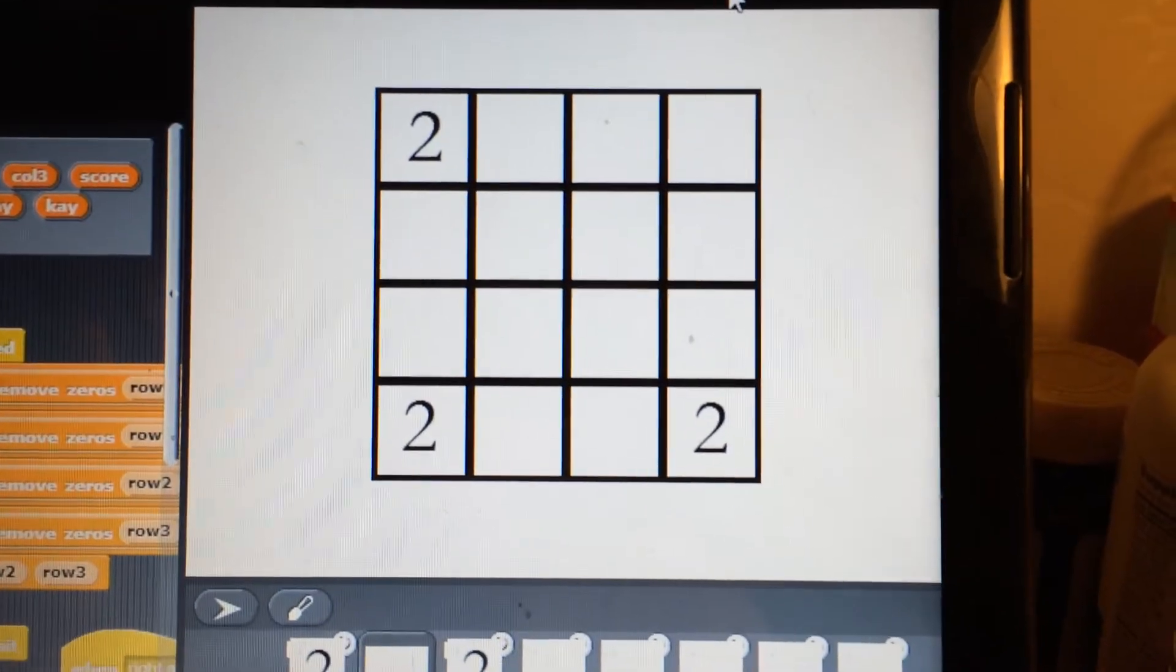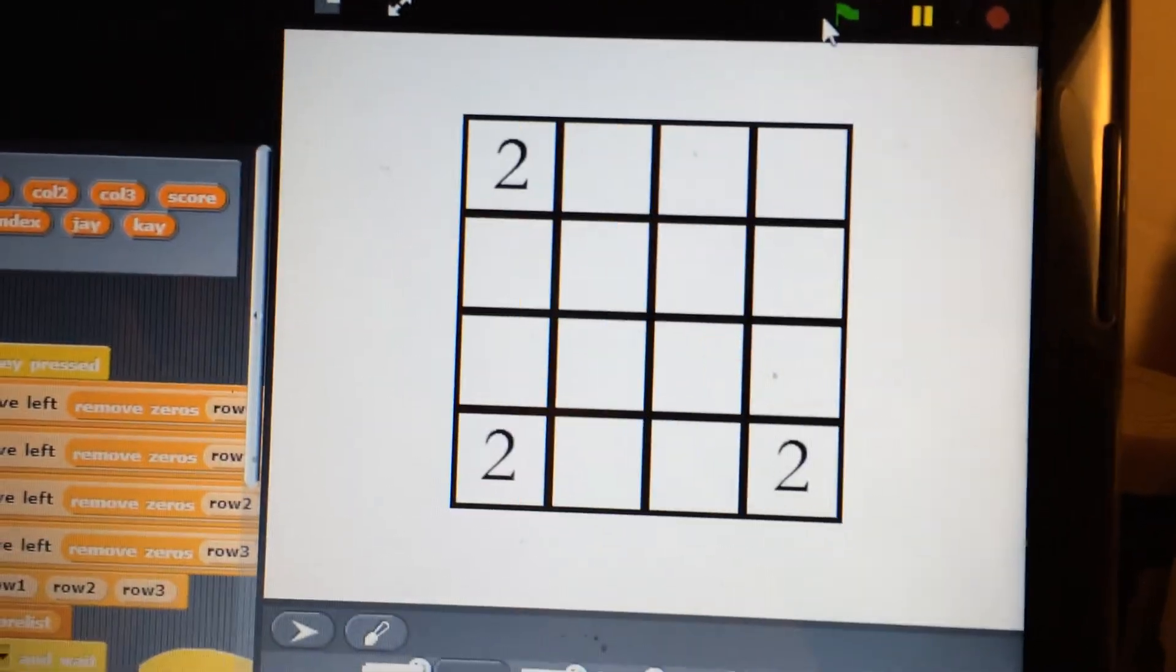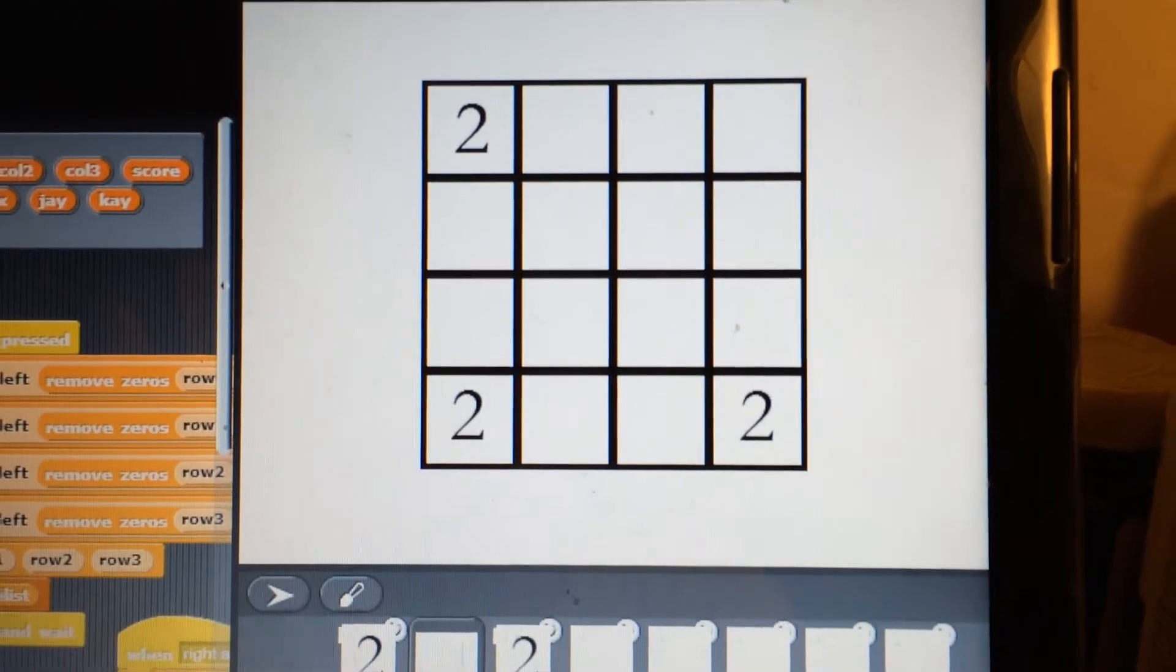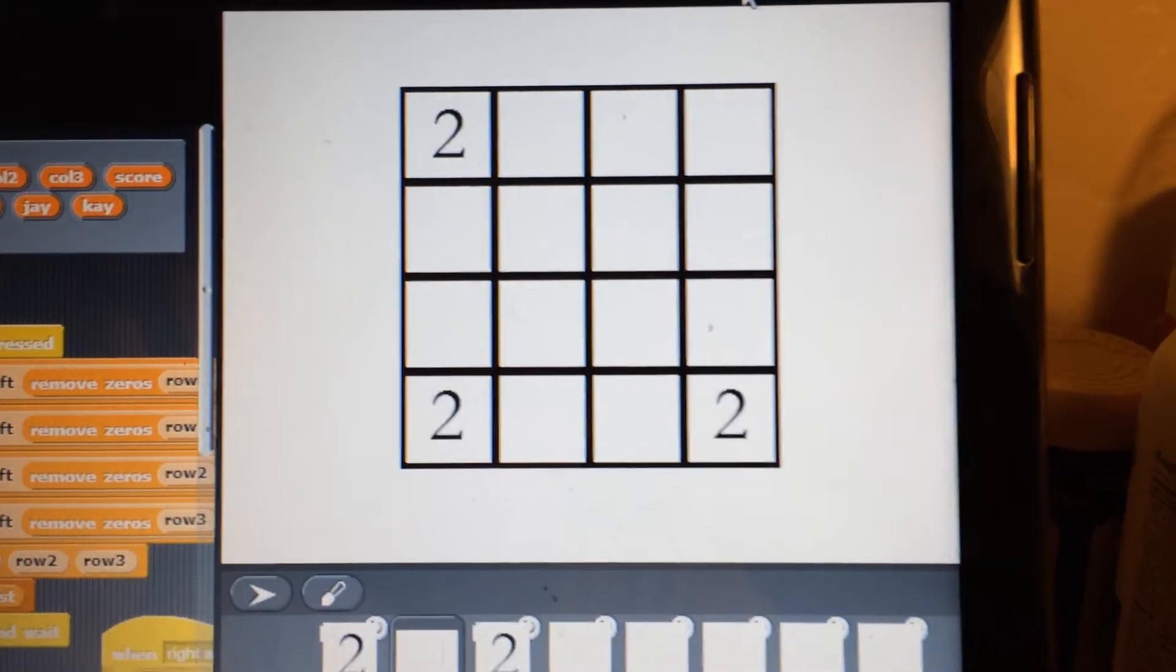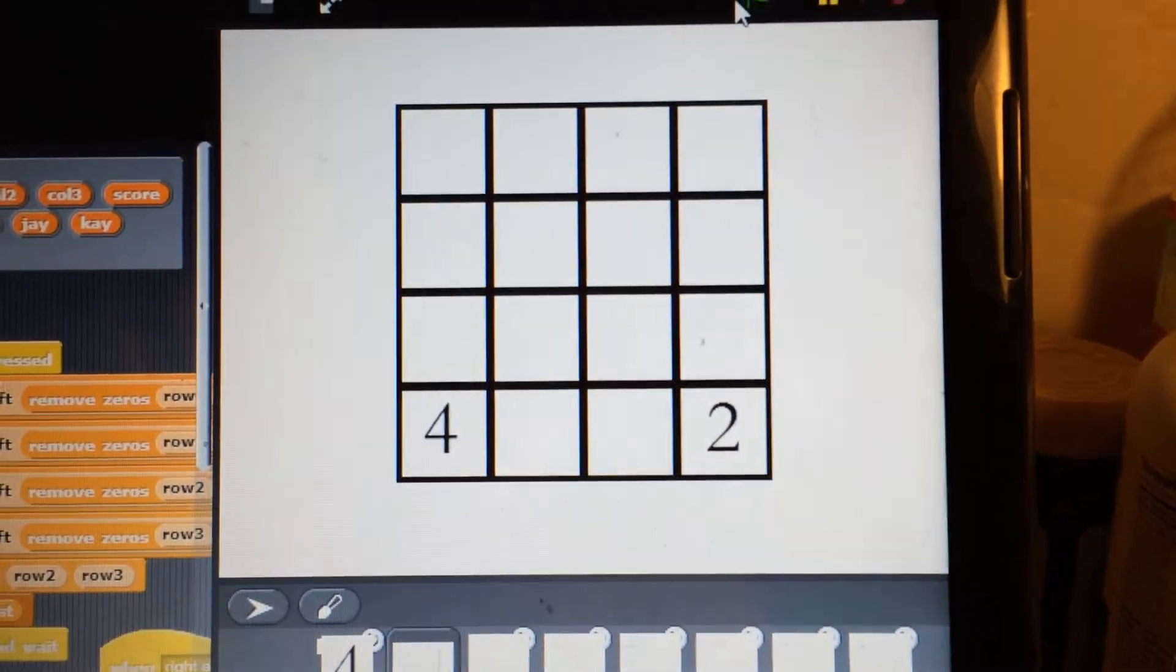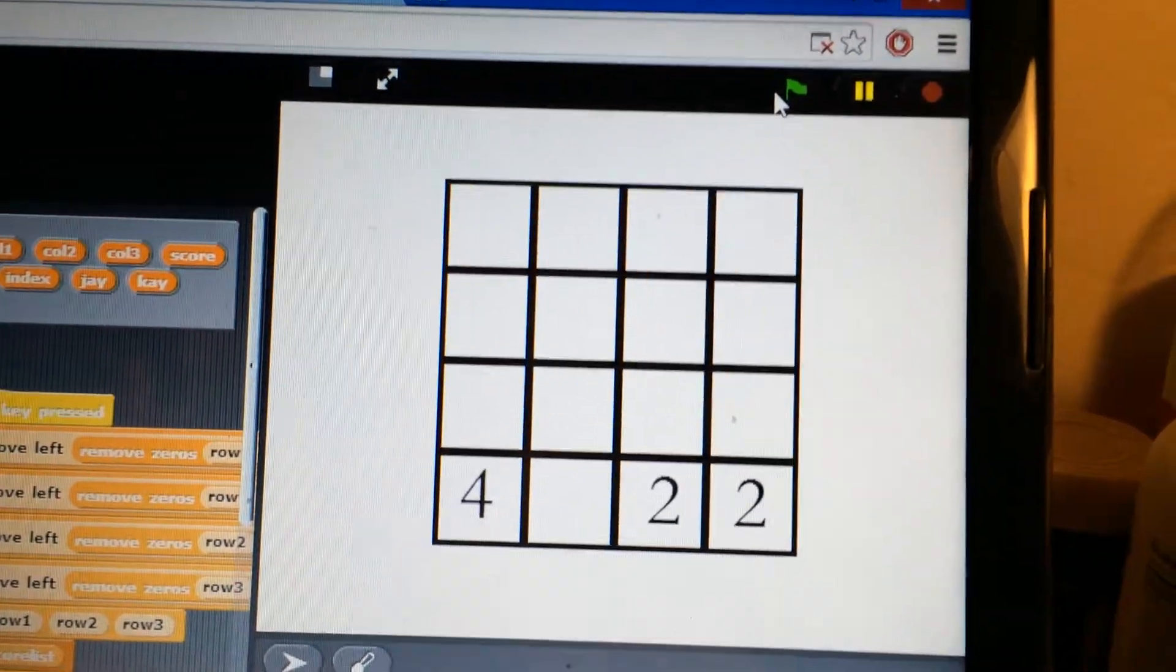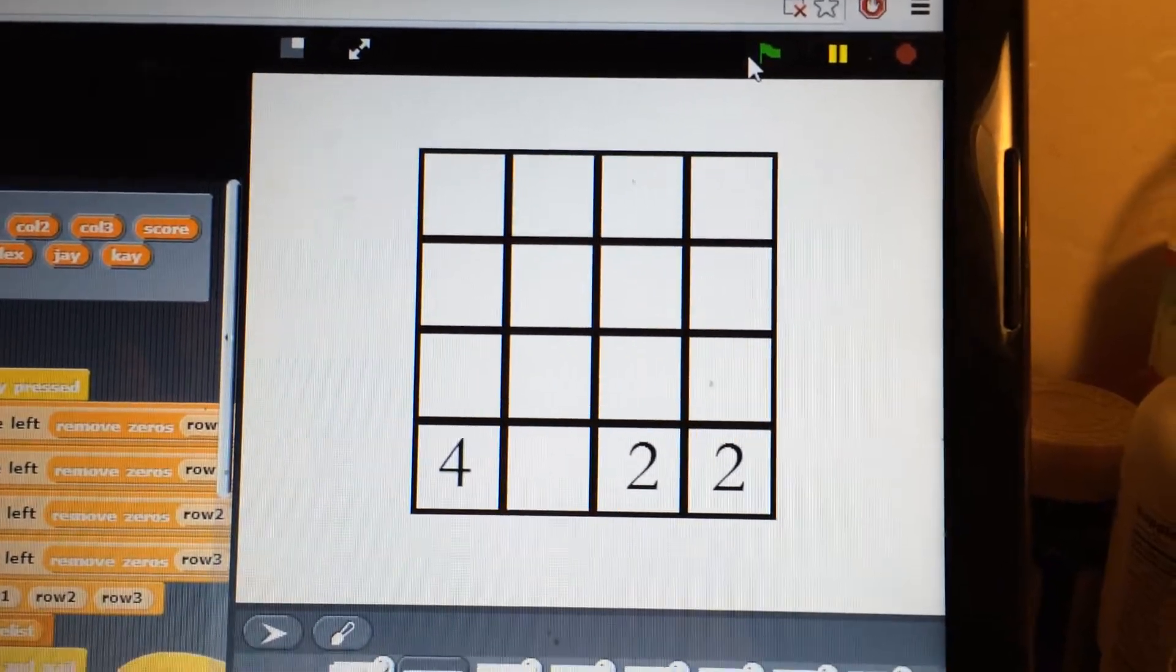After my move has been made, a randomly generated two has been made as well. Let's say I want to move down. Two plus two made four. And that is the goal of the game. The goal of the game is to add two alike numbers to make the sum.